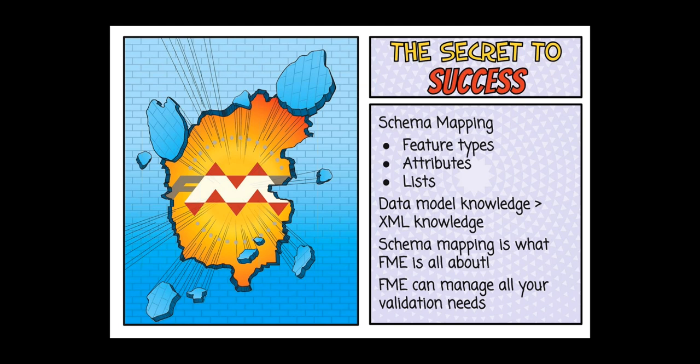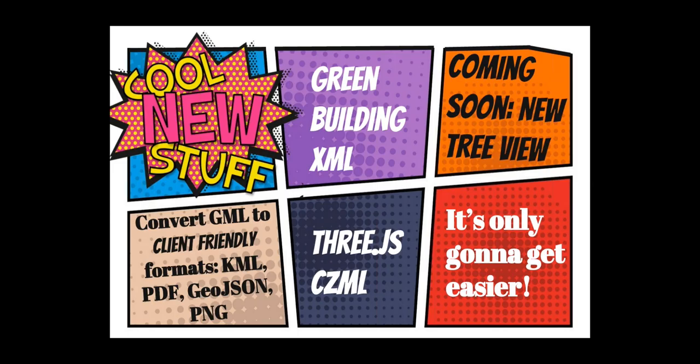Going the other way — from a database out to AIXM — consuming data from Postgres and extracting it to AIXM so that you can have an AIXM WFS served off of Postgres. Not a lot of transformers, and looking at this workspace with what's coming in FME 2016, I can see four of those transformers becoming one with the new attribute manager. It's not an overwhelming workspace for going from Postgres to AIXM, which is not the world's simplest data model.